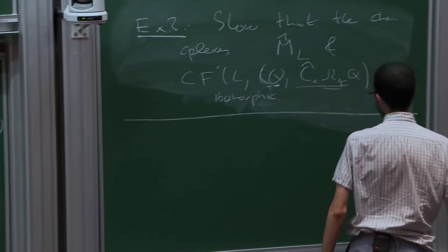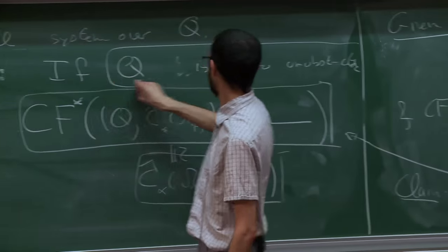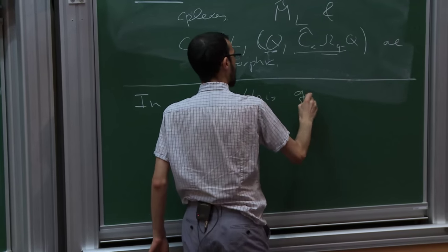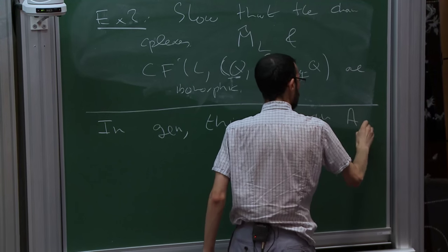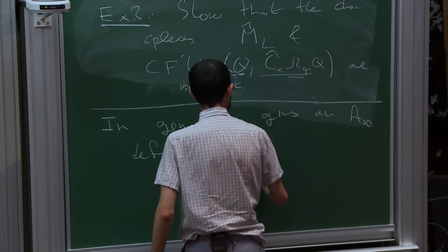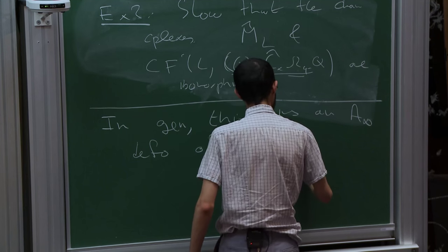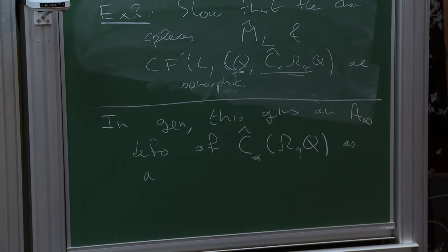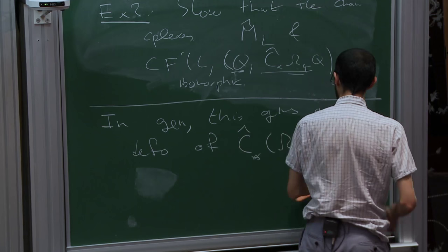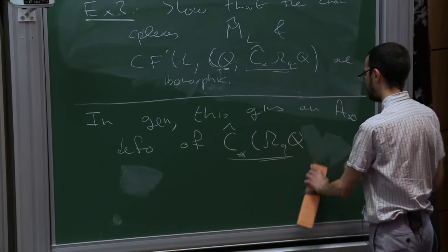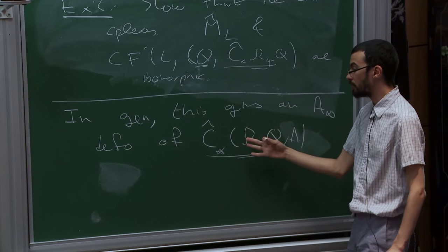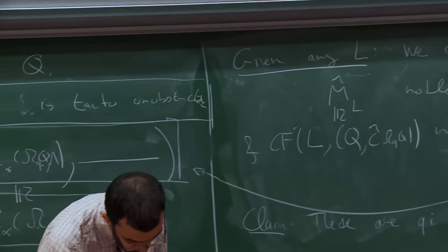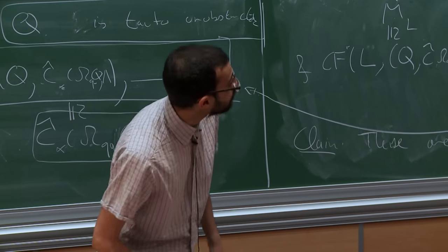So why did I do this? Because more than one person asked me, what happens if Q is not tautologically unobstructed? In general, this construction gives an A∞ deformation of the completion of the chains on the base loop space as a ring. And then in general, you don't get modules. So M̂_L, which we defined as a module over this ring, is not defined as a module over this deformation. That's a story I don't want to go into, but I just want to mention it because it's the beginning of a very long story.